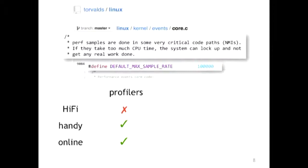This is the traditional profiler: it won't give you high-fidelity information, but it's very handy. For example, perf is a nice tool — before perf you had to patch the kernel to get a profiler working. Now you just run perf, get some data, and even though it's simple, it helps a lot.